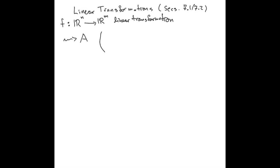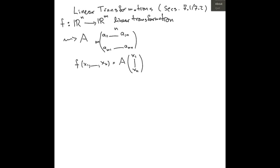Which is an m by n matrix: a_11 up to a_1n, a_m1 up to a_mn. This is an m by n matrix and it just satisfies f of (x_1 through x_n) is the matrix A applied to the column vector x_1 through x_n.